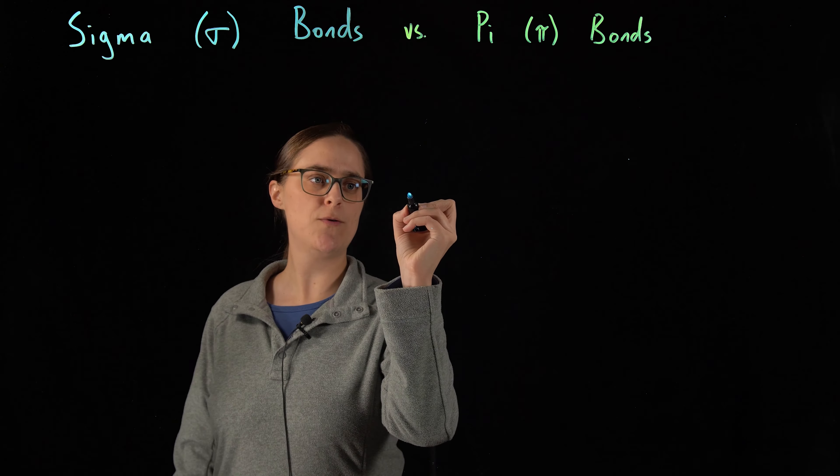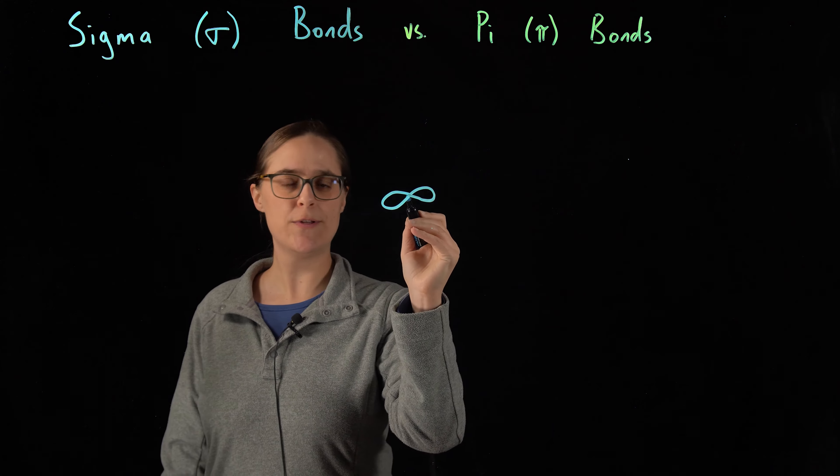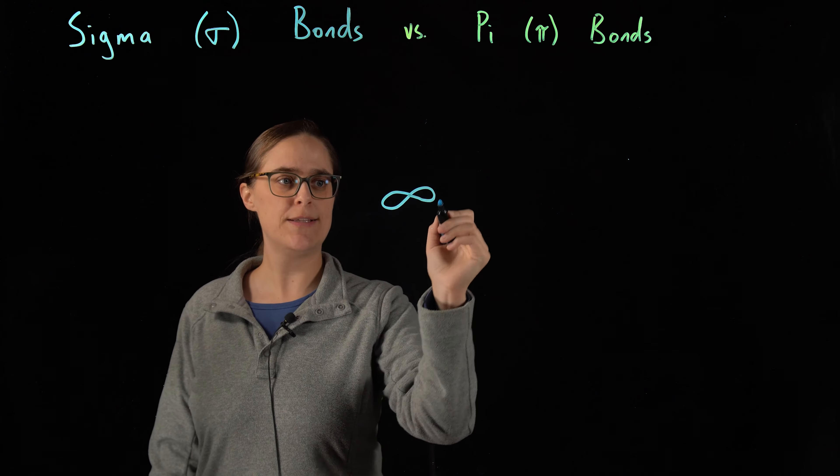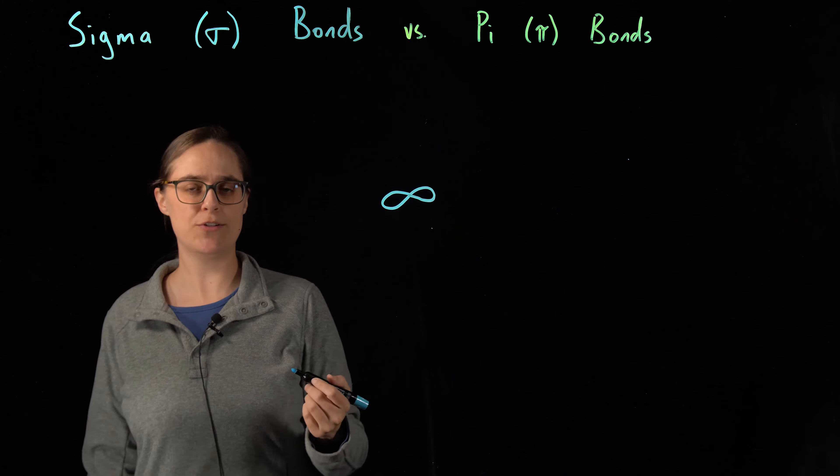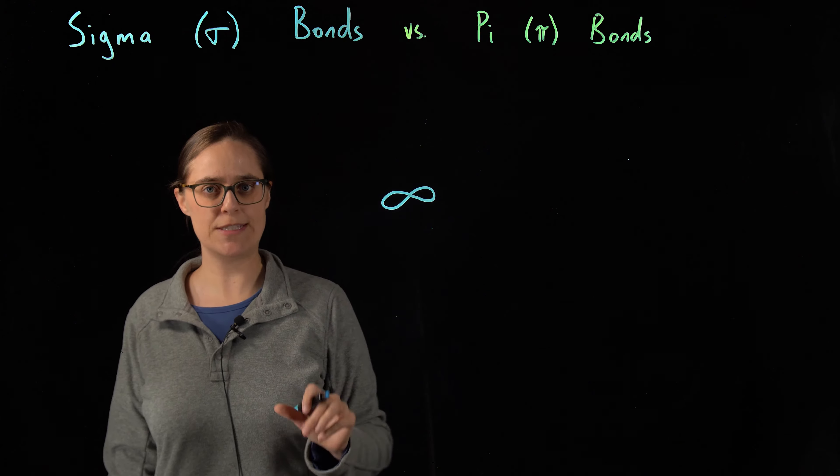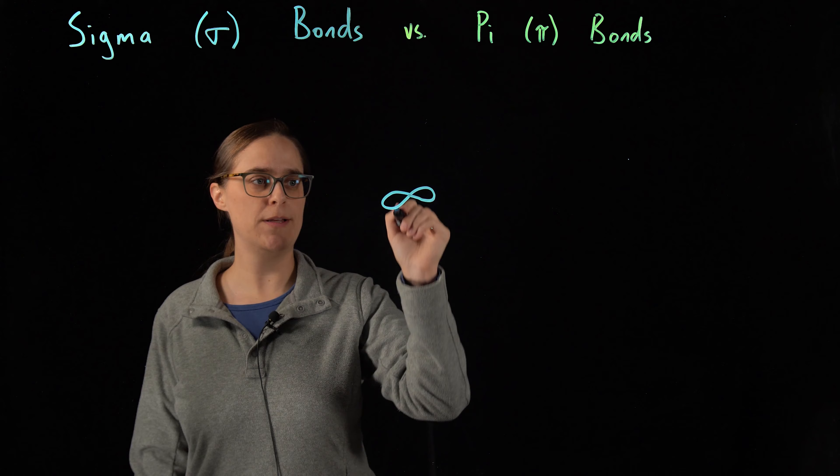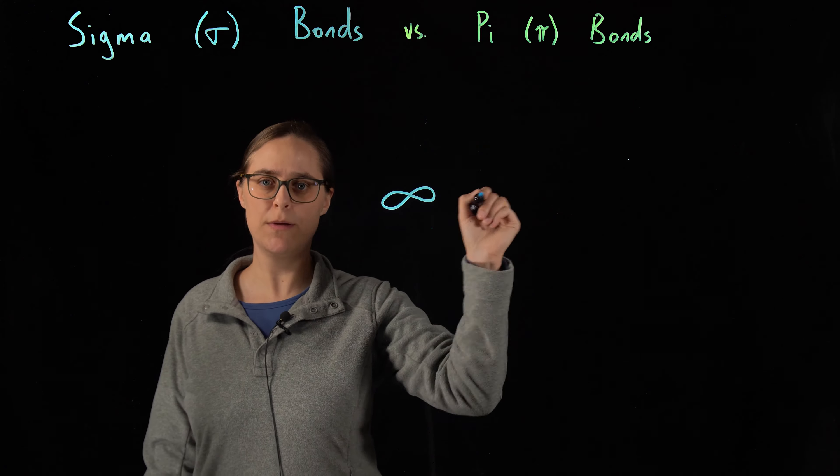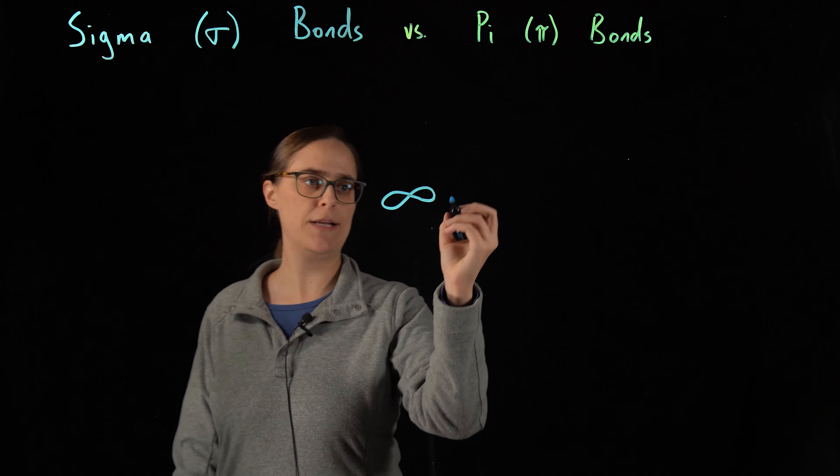So imagine that you have an orbital that's dumbbell-shaped. The nucleus is in the very center. This region of space is where electrons are most likely to be found if they're assigned to this orbital. A covalent bond is when an orbital from this atom overlaps with an orbital from another atom.